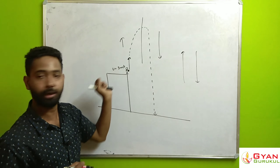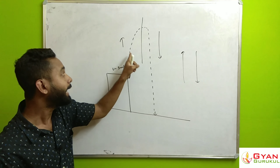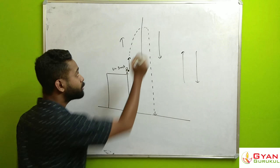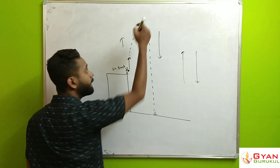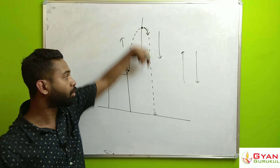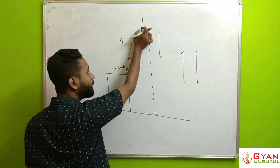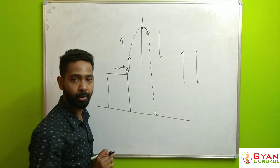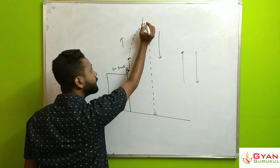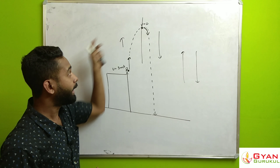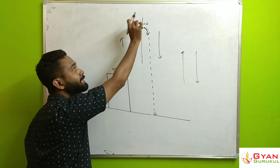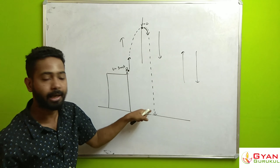Now, what is important is this particular point. When we throw the ball upward, at a particular point in time the ball reaches the highest point and returns. The highest point is where the ball momentarily stops. The most important thing about this point is that at the highest point, the velocity of the body would be zero, and from that point the body starts falling downward.